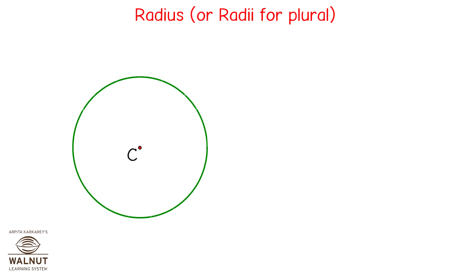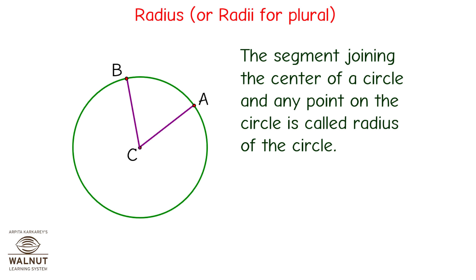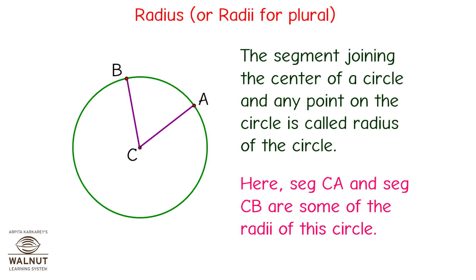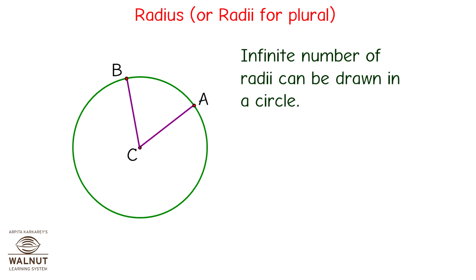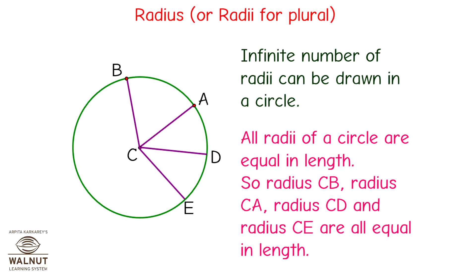Radius — or radii for plural. Take any point on the circle, let's name it A. Join point A and point C, which is the center of the circle. The segment joining the center of a circle and any point on the circle is called the radius. Segments CA and CB are radii of this circle. An infinite number of radii can be drawn in a circle, and all radii of a circle are equal in length. So radius CB, radius CA, radius CD, and radius CE are all equal in length.